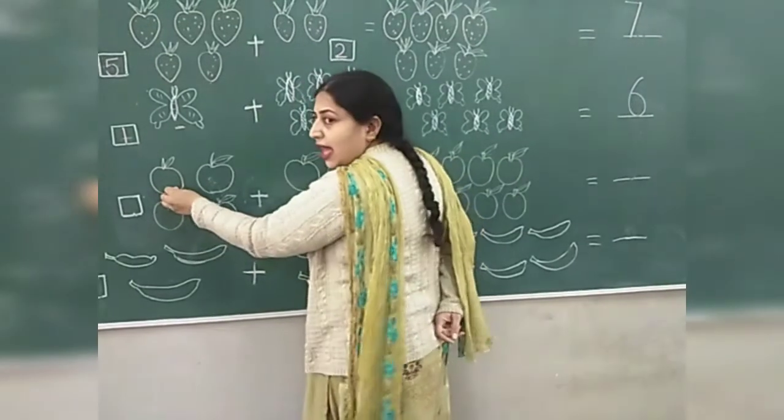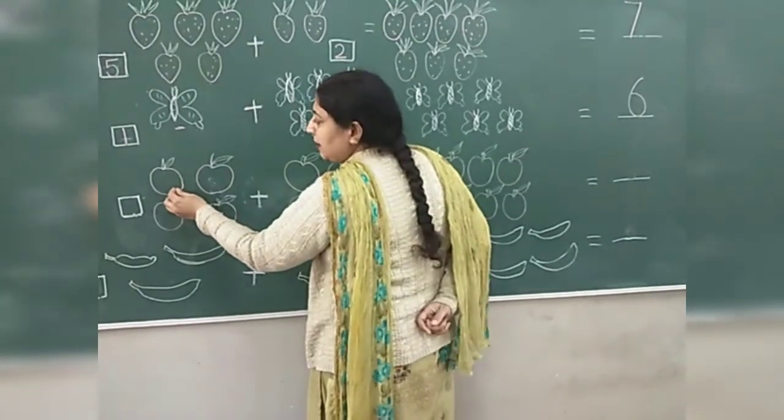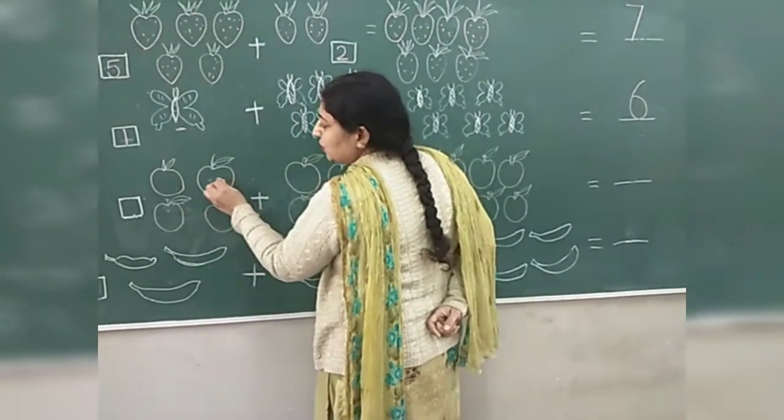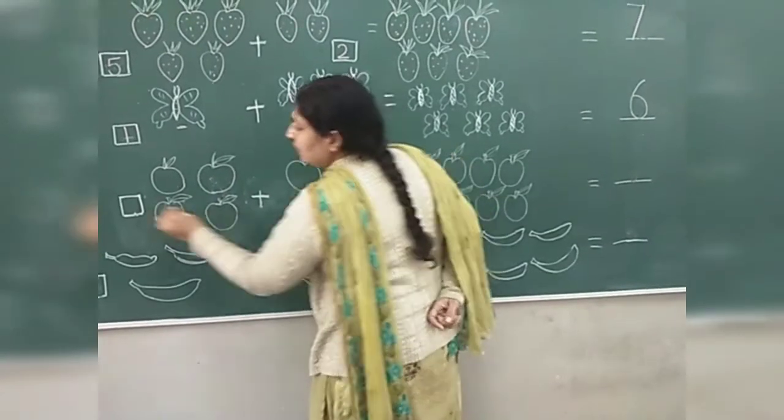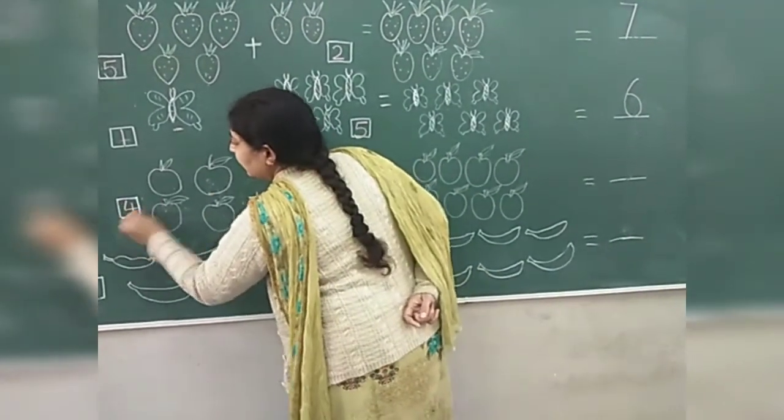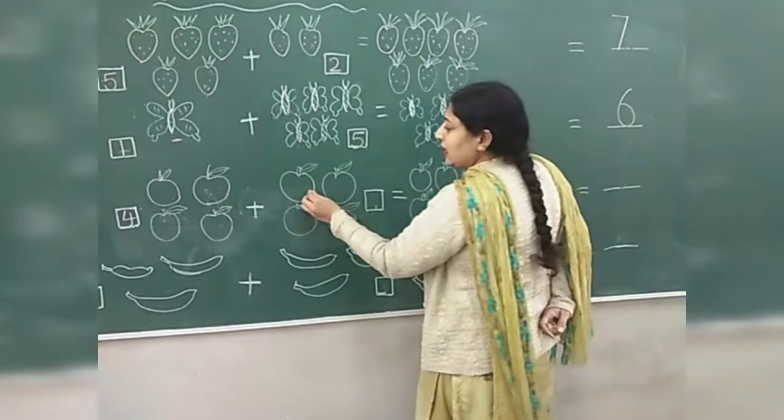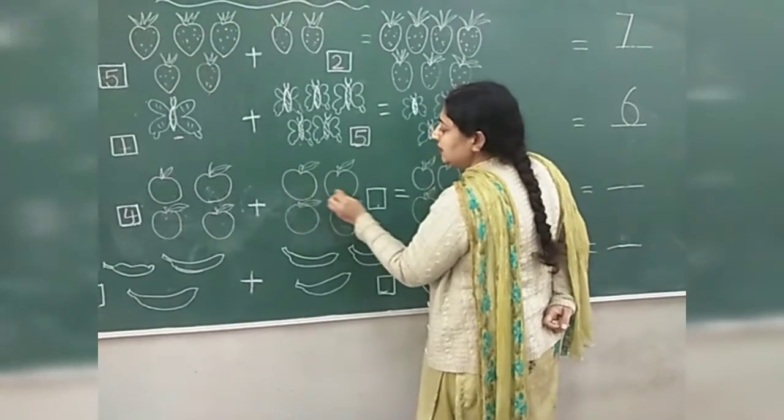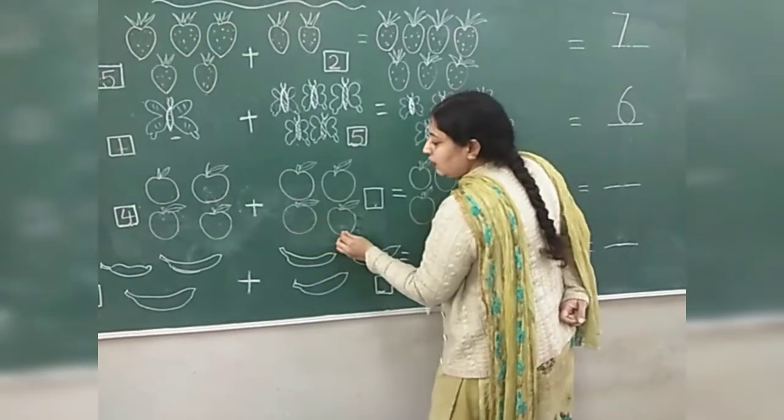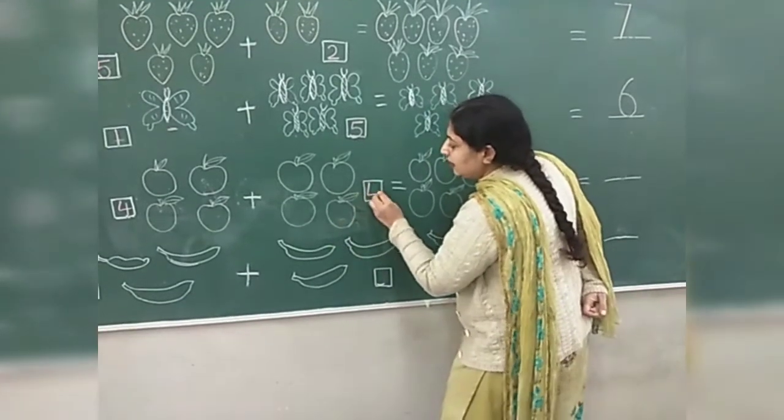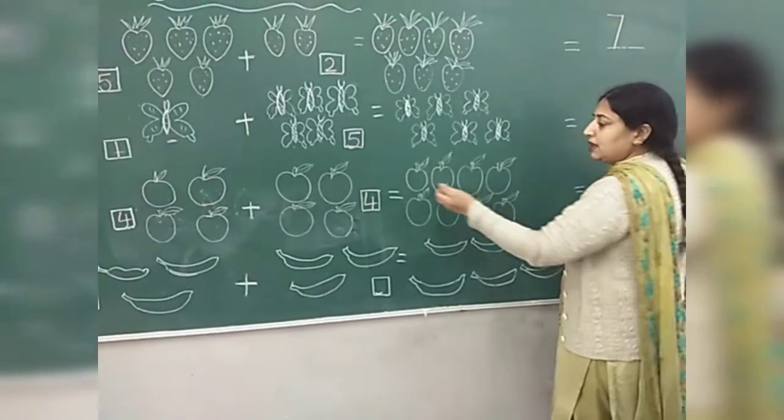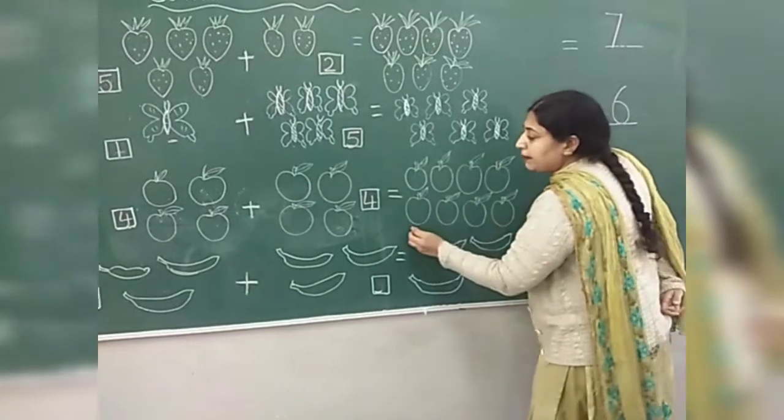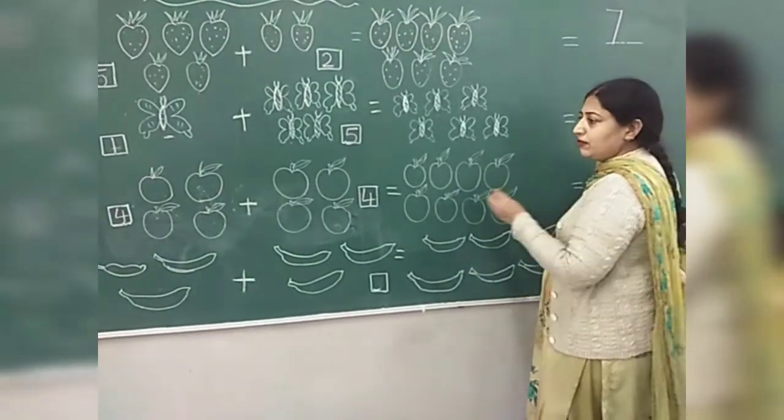In here we have apples. To count the apples. One, two, three and four. So we have written here four. We have the count these. One, two, three, four. So we will write here number four. Now, how many apples total we have?